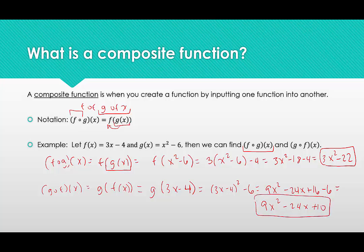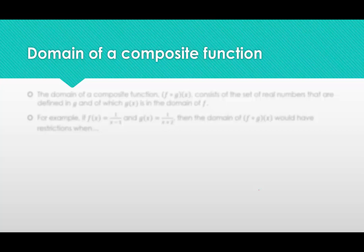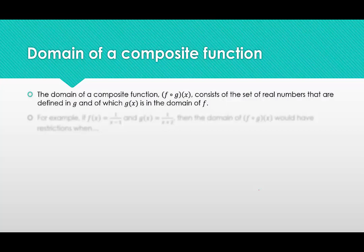So those are our two examples of what composite functions look like — it's just putting one function into another function. Now let's talk about the domain of a composite function. For f of g of x, the domain consists of the set of real numbers that are defined in g — meaning the domain of g — and also what output values from g are in the domain of f, or restricted by the domain of f.